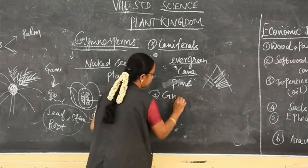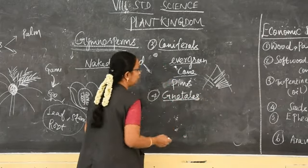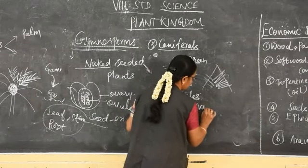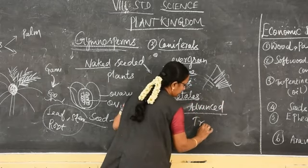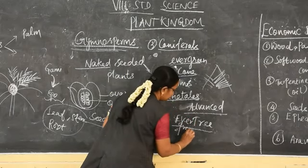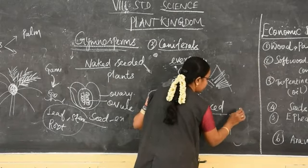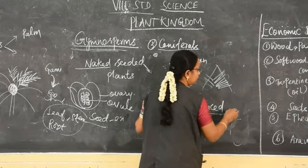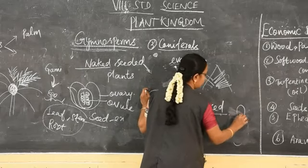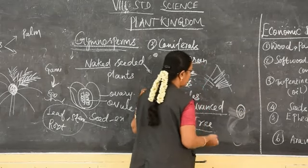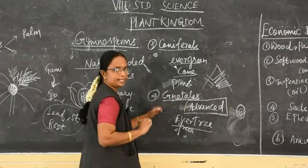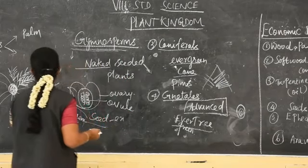Next is Gnetales. Gnetales show some advanced characters. They are evergreen tree-like structures. Here the ovule is a naked seed — the ovule is not surrounded by the ovary. But Gnetales somewhat shows advanced characters like angiosperms. So these are the four types of classification under Gymnosperms.